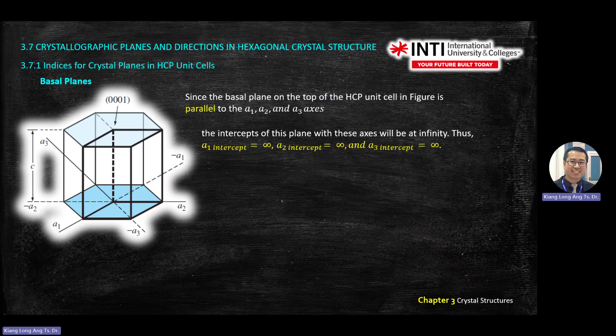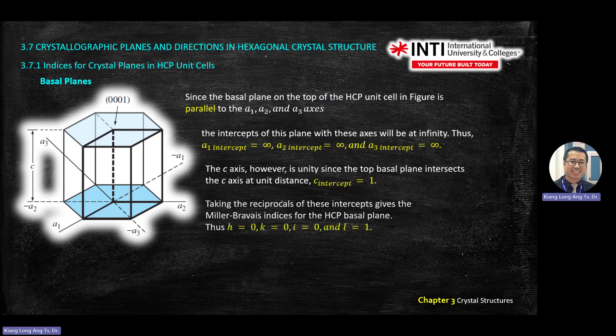Here you can see A1, A2, A3 values. When you do a plane, we need to apply Miller's law where we reciprocate or inverse the numbers. So you inverse 0, get infinity; infinity; infinity; infinity. You inverse 1, you get 1.